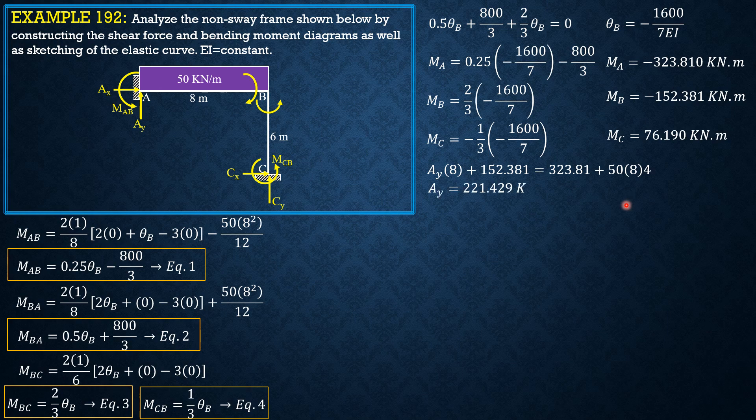Solving for Ay, Ay equals 221.429 kilonewtons. Then shear at B just to the left: summation of moments about A. Let's assume upward times 8 plus moment MAB, which is 323.81.